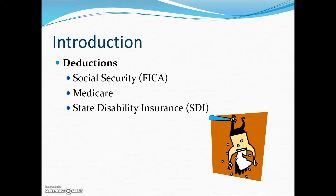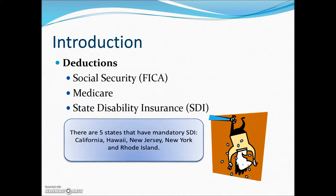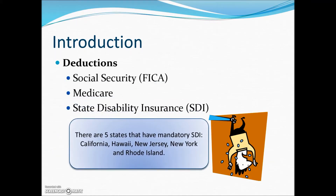Subtracting these deductions from gross earnings results in net pay — the amount the employee receives. States that require mandatory disability insurance are the following five states: California, Hawaii, New Jersey, New York, and Rhode Island.